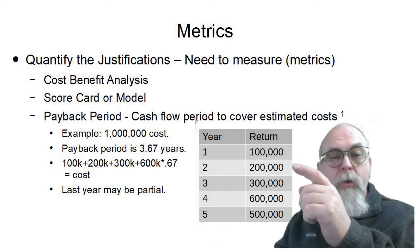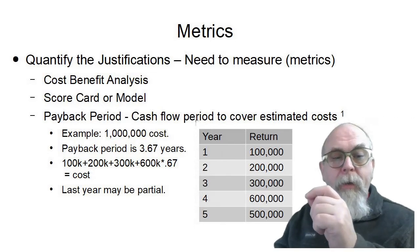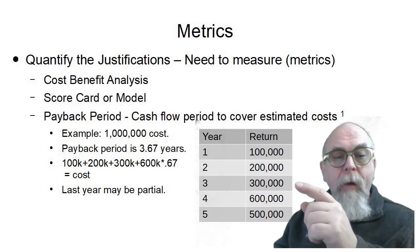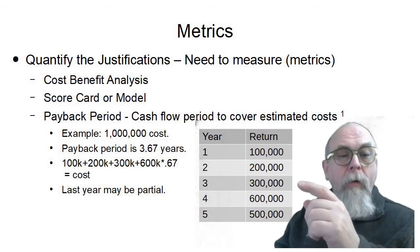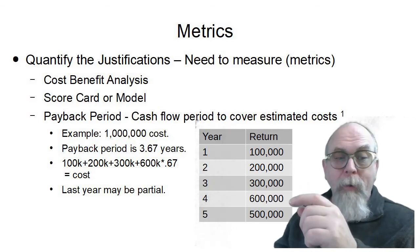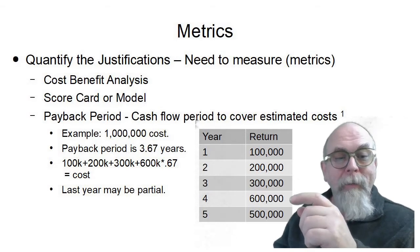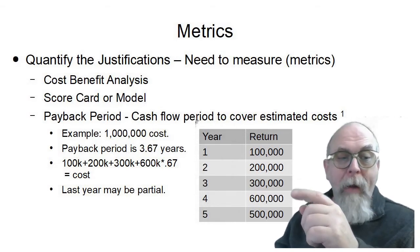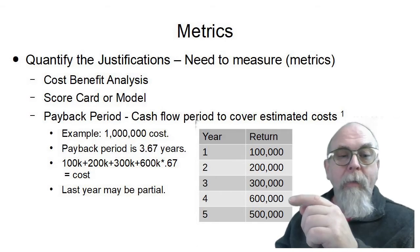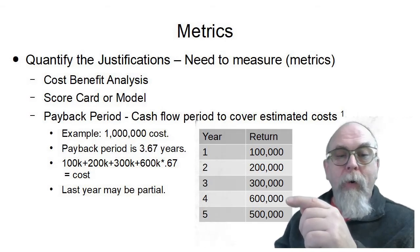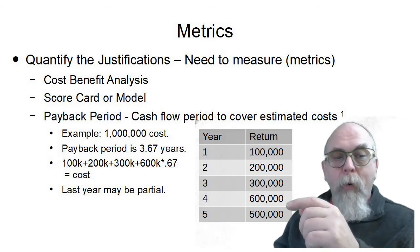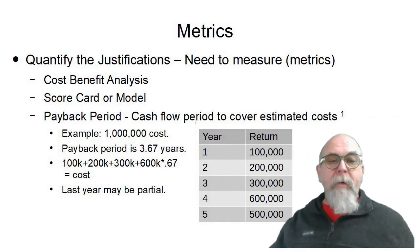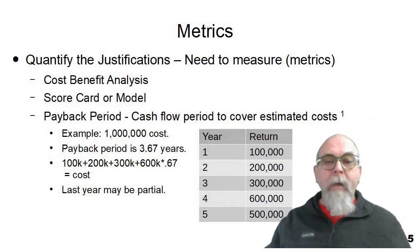And the answer is 3.67 or three and two thirds years. And you can see that here we get $100,000. So at the end of year two, we've received $300,000. At the end of year three, we've received $600,000 of our million dollar investment. And we need $400,000 more to pay back our original million dollar investment. So that's two thirds of year four. So you can see that would be 3.67 years for the original million dollar investment to be paid back using a payback period.